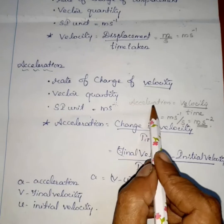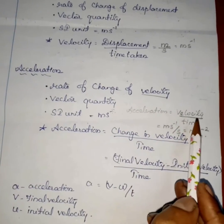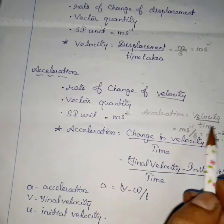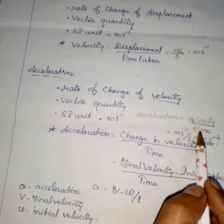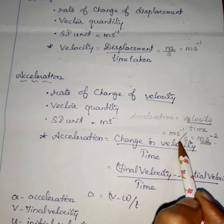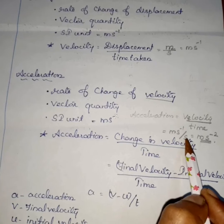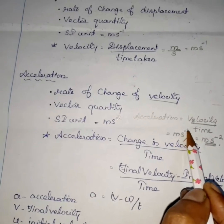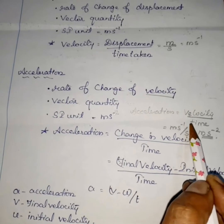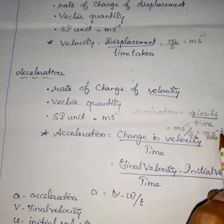Acceleration equals velocity divided by time. The SI unit of velocity is meter second power minus one, divided by time in seconds. So the SI unit of acceleration works out to meter second power minus two.